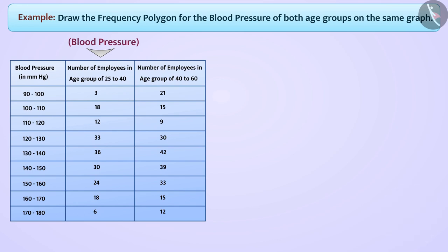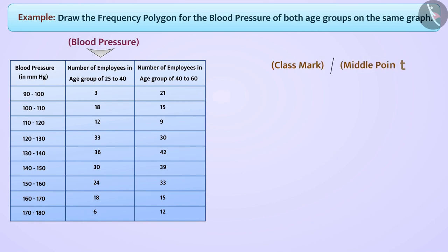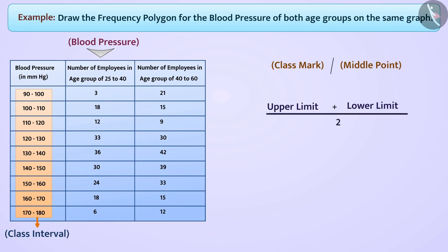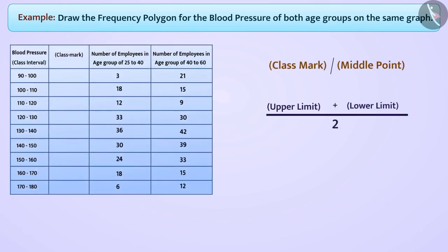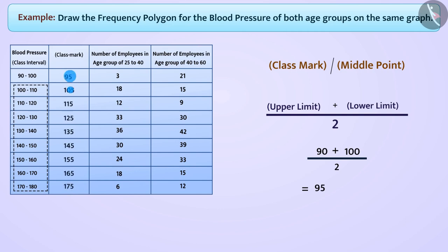Here we have to show both age groups in the same graph. For our convenience, we will draw a frequency polygon without drawing a histogram. First, we will find the class mark, that is the midpoint of each class interval. For this, we will divide the sum of the upper limit and lower limit of each class interval by 2. For example, the midpoint of class interval 90 to 100 is 95. In the same way, we will find the class marks of all class intervals.